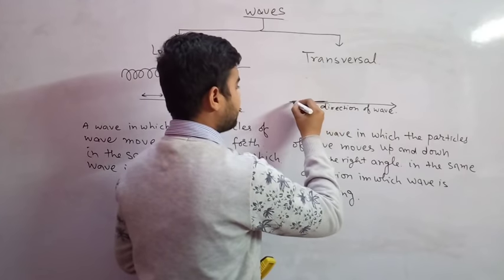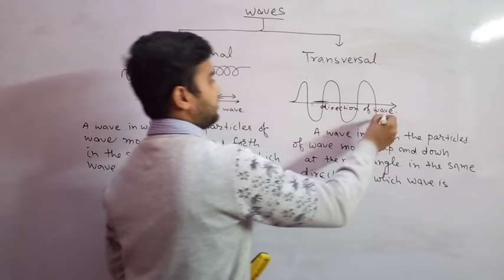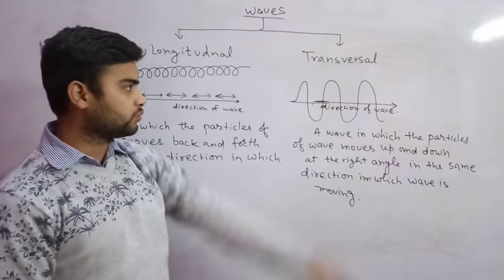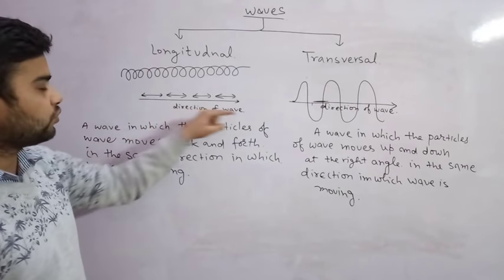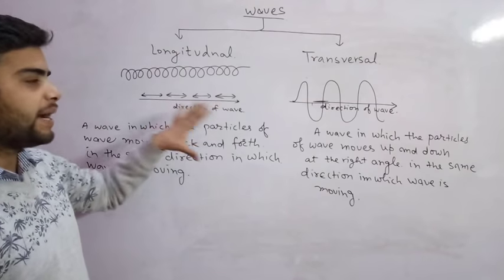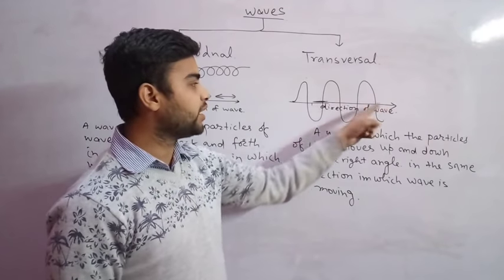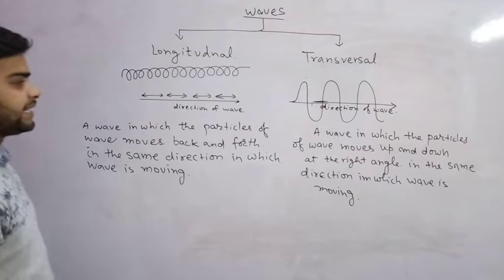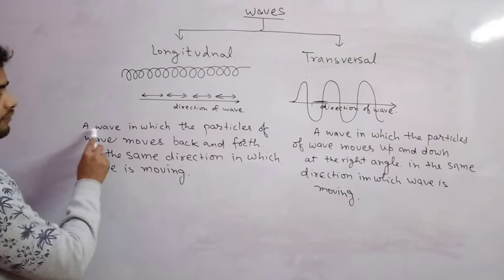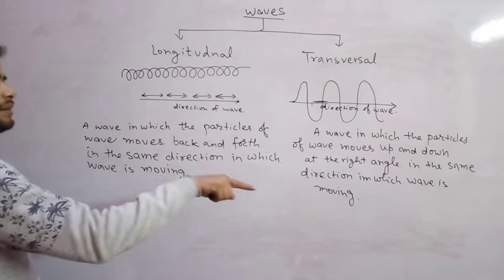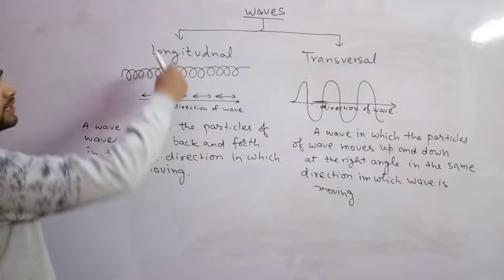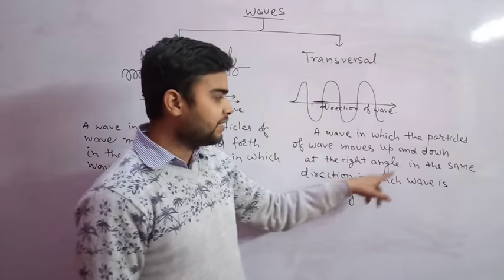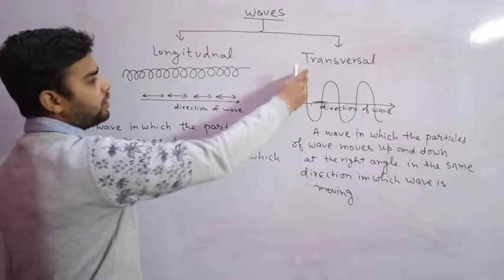So the wave in which the particles move up and down at a right angle to the direction in which the wave is moving, it is called the transverse wave.